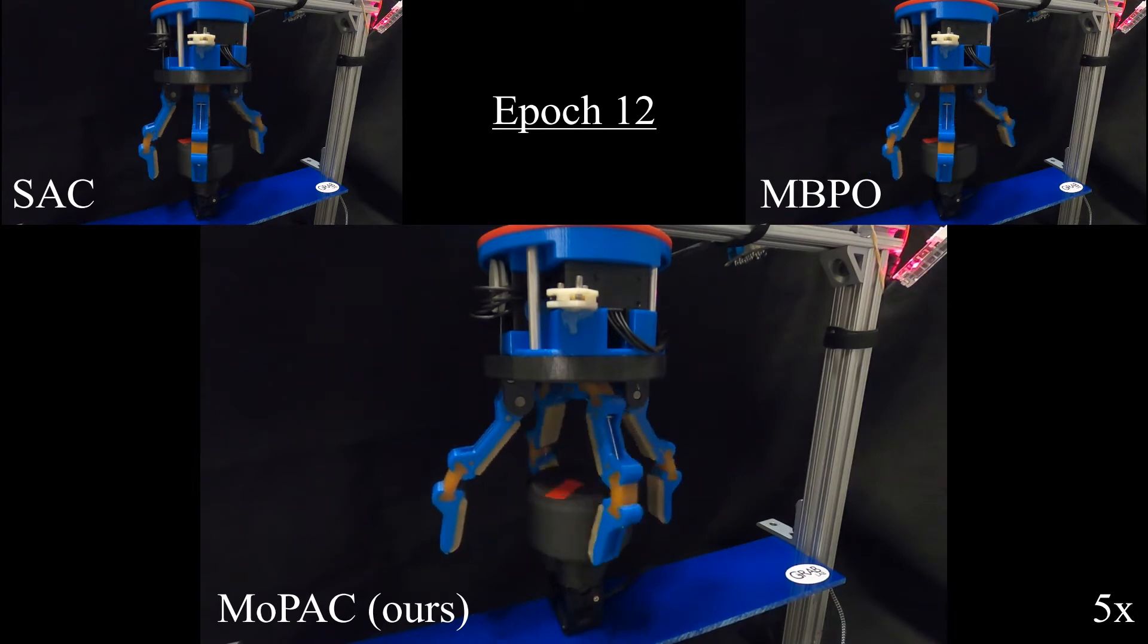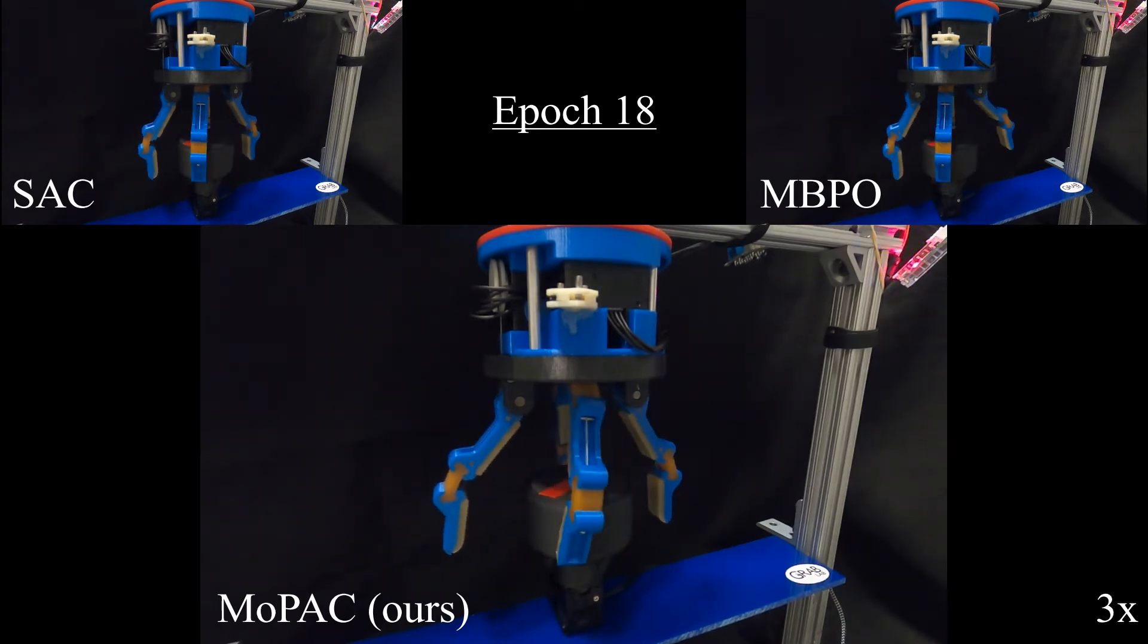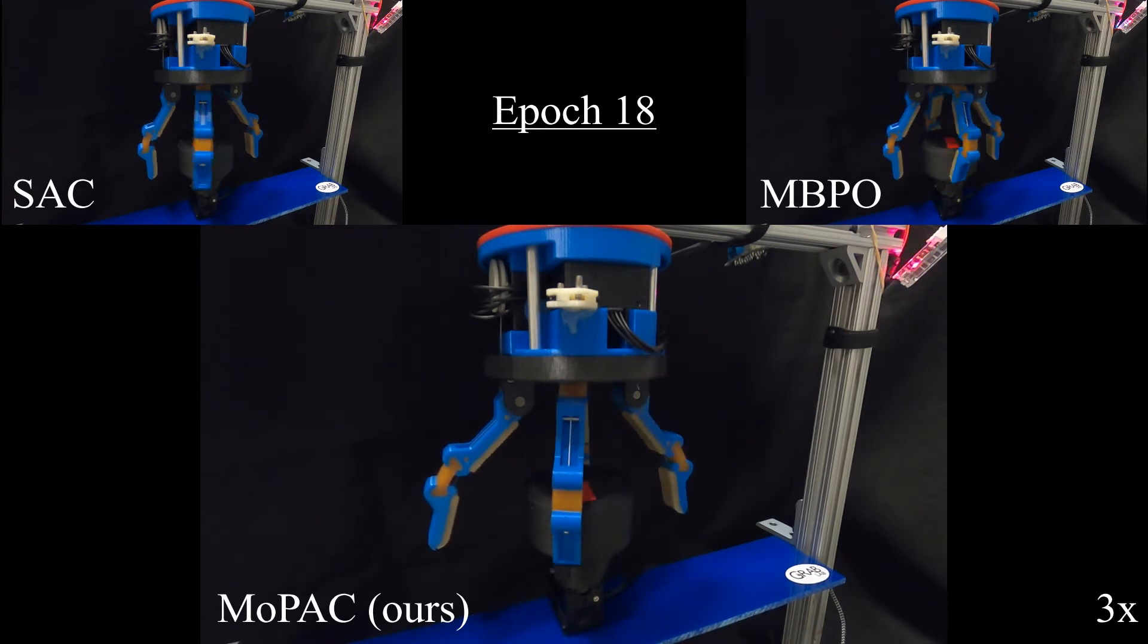This constraint limits the types of hands that are able to learn this task efficiently, underscoring the utility of underactuated hands. Similarly, we see faster convergence of MOPAC than the other two baselines.